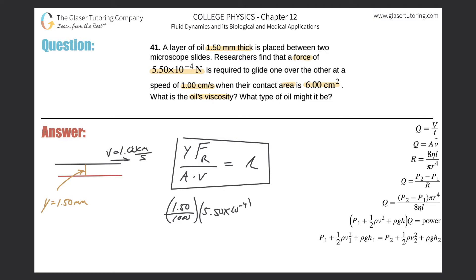Then divided by the surface area in contact. But it's 6 square centimeters, so you have to convert that into square meters. You're going to take 6 and divide it by 100 squared.